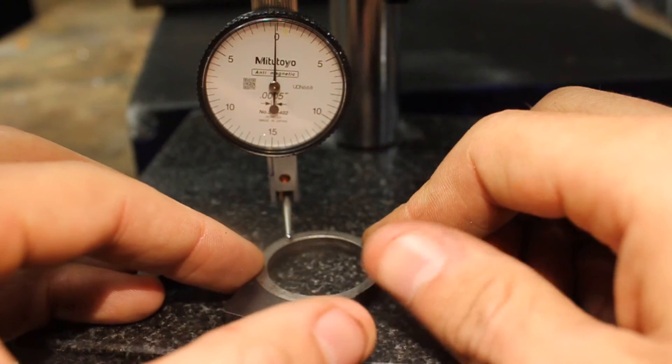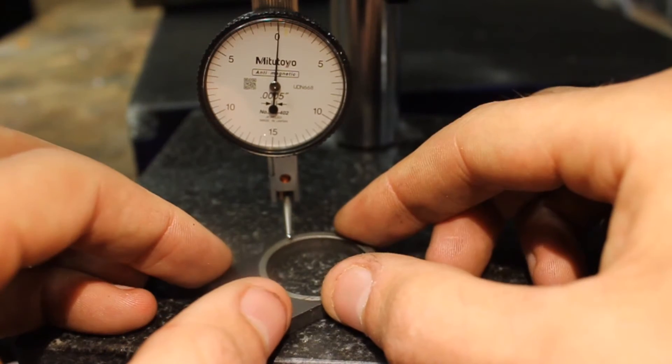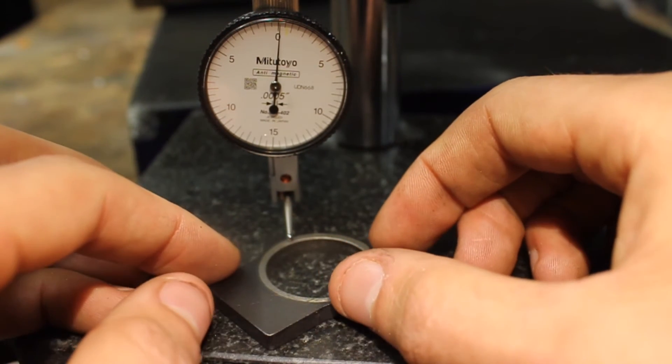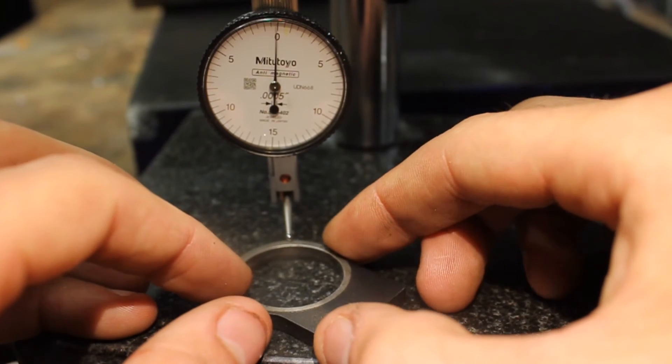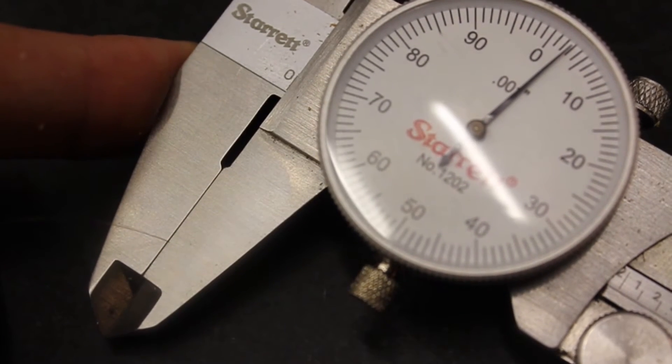Now, usually a production recoil lug is not out more than thousandths or less of an inch. And a thousandths of an inch doesn't seem like much. I mean, after all, it's only about half the width of a human hair.